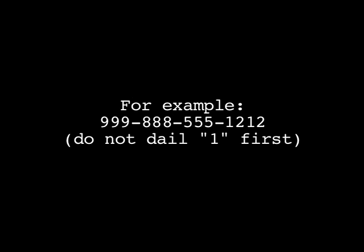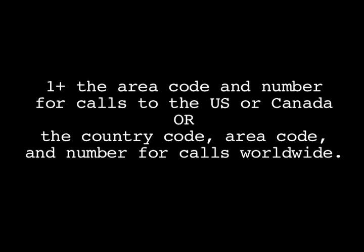You can now make a phone call. You can place a free call to another network number by dialing the 10-digit number starting with 999 — do not dial a 1 first. You can place a call to a traditional landline or mobile phone by dialing either 1 plus the area code and number for calls to the US or Canada, or the country code, area code, and number for calls worldwide.